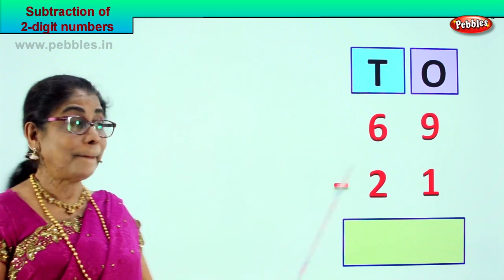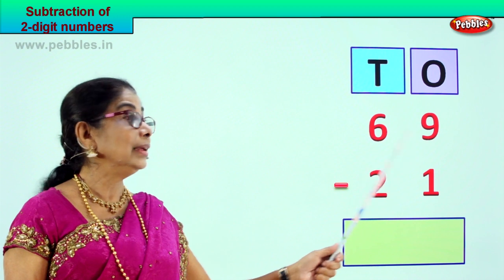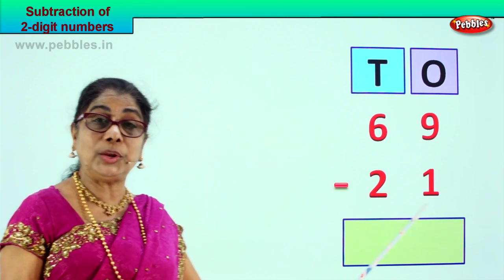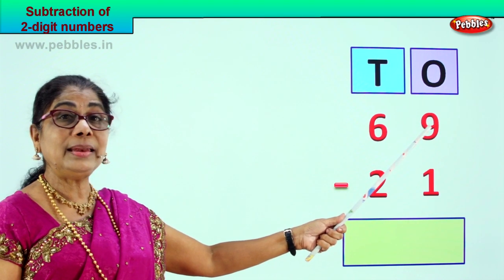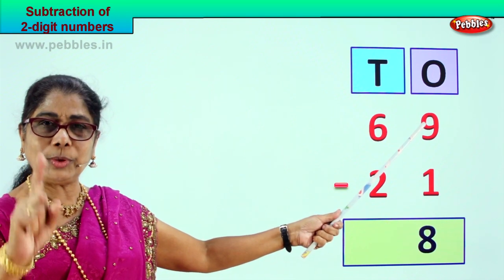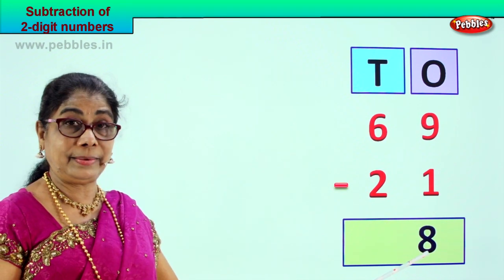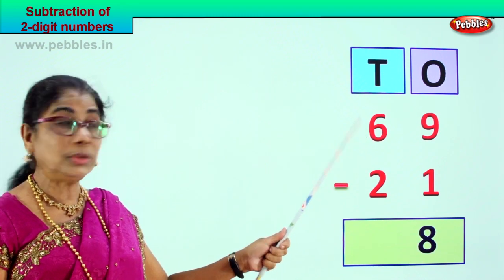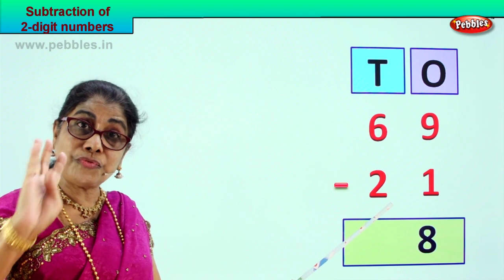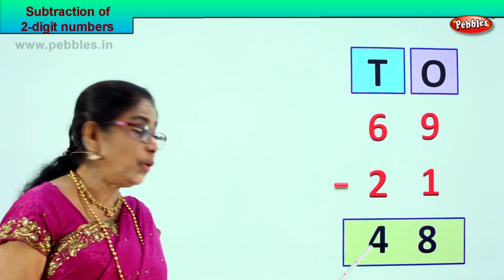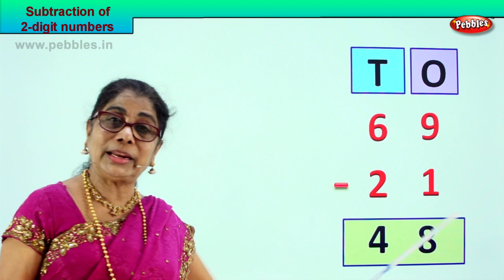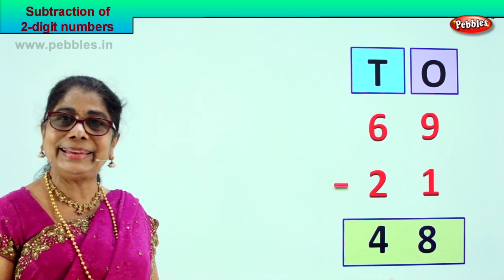Let us go to another sum. 69 minus 21. Six tens, nine ones, two tens, one one. 69 take away 21. Go to the ones place — nine minus one, nine take away one is eight. From six you take away two — two, three, four, five, six — that is four. Six minus two is four. Your answer is 48. 69 minus 21 gives you the answer 48.